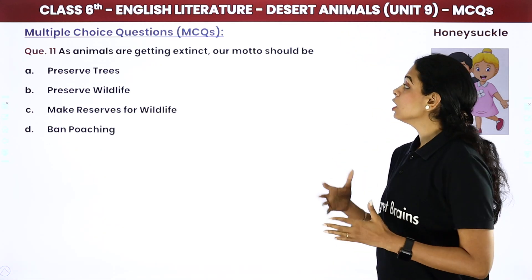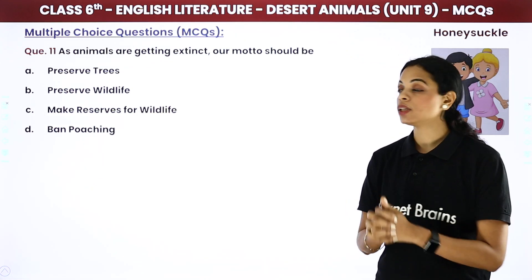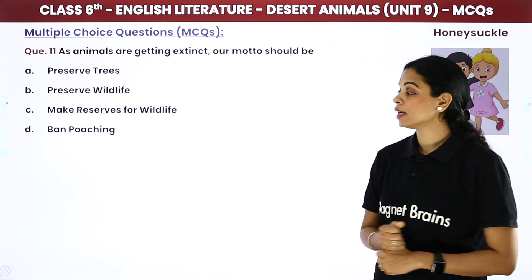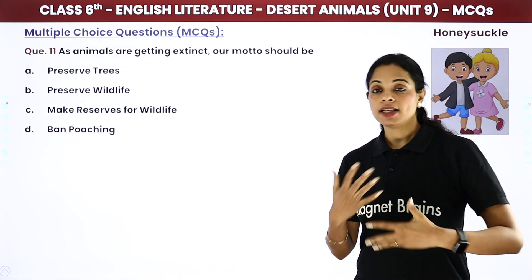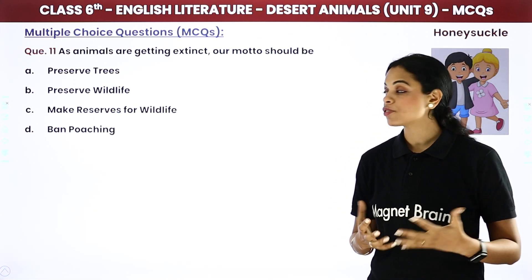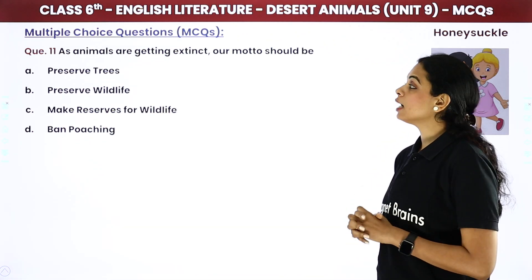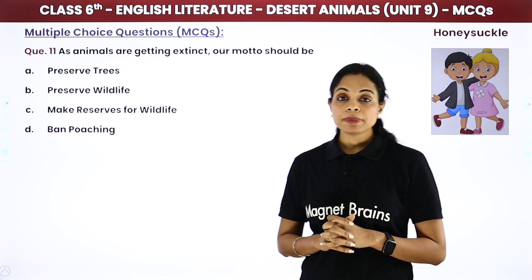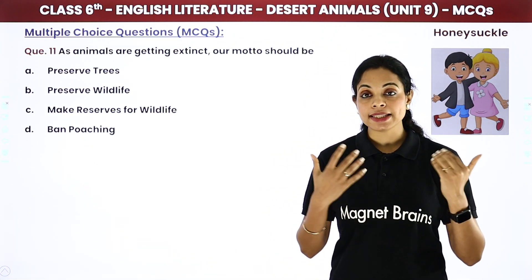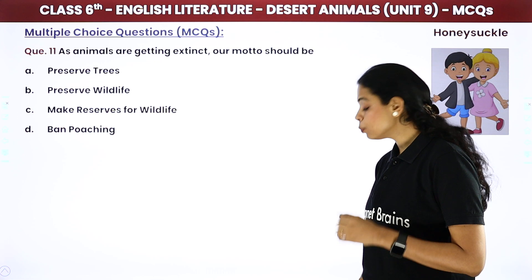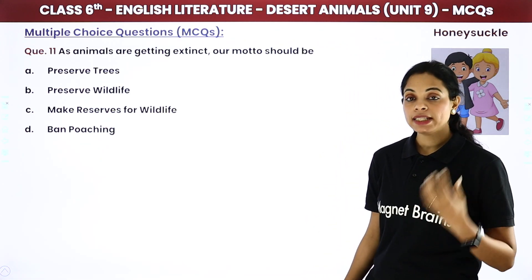As animals are getting extinct — animals लुप्त होते जा रहे हैं। हमारा motto क्या होना चाहिए? हमें trees बचाने हैं, wildlife बचानी है, reserves और national parks बनाने चाहिए, और poaching पर पूरी रोक लगानी चाहिए। The answer is: preserve them — जो बचे हुए animals हैं, उन्हें wildlife में preserve करके रखना है।